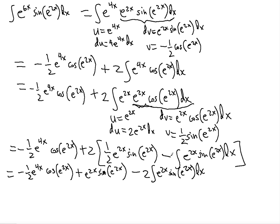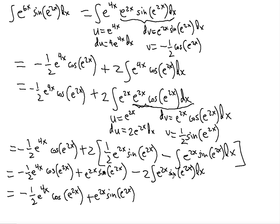The remaining integral of e to the 2x sine of e to the 2x dx is straightforward — its antiderivative is negative one half cosine of e to the 2x, which we already found from the first dv. So that term becomes: negative 2 times negative one half cosine of e to the 2x, which gives plus cosine of e to the 2x, plus a constant.